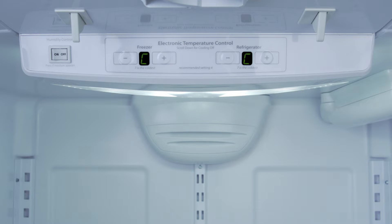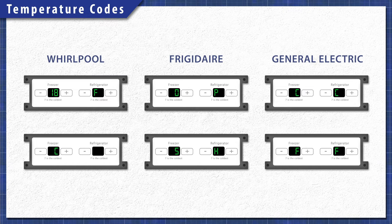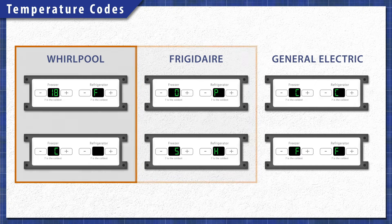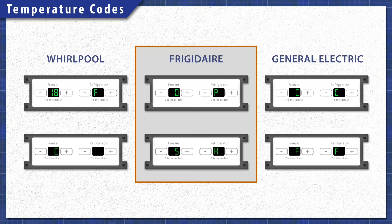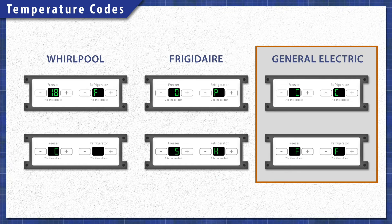A temperature or sensor error means that the sensor might have failed. It can also mean that the temperature is too high in the fridge or freezer compartments. In Whirlpool models, this will likely be an 18F or a C code. Frigidaire models might show OP or SH. General Electric models will display a CC or FF code.